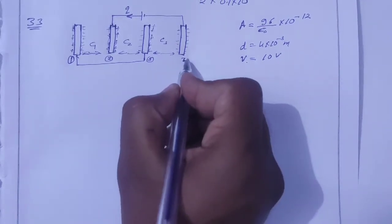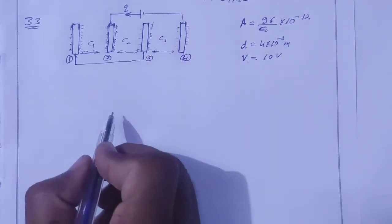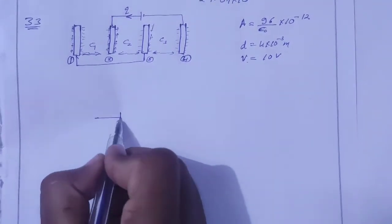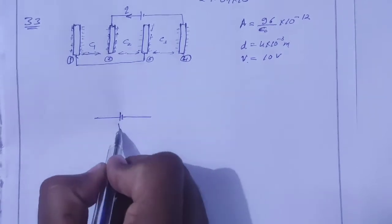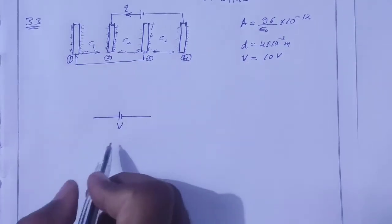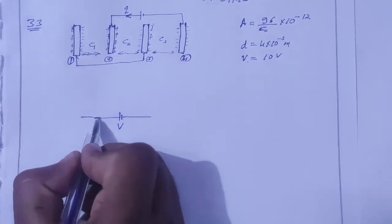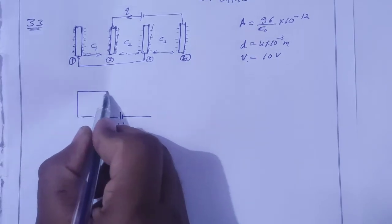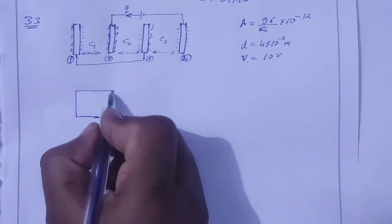The plates are labeled plate 1, plate 2, plate 3, and plate 4. The same battery of V volts is connected across the combination.